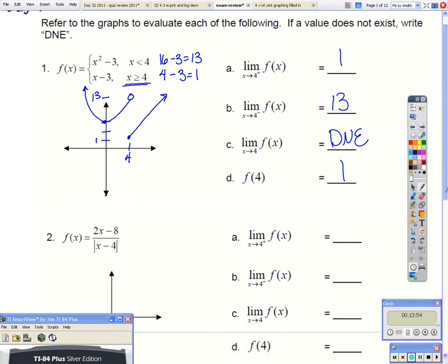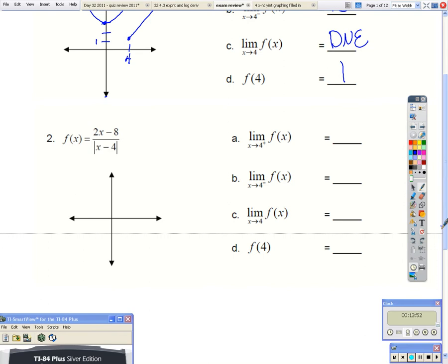So we're going to do the same thing for number 2. I could use my calculator to help me graph that, or you could plug in some points. So the limit as x approaches 4 from the right is positive 2. As we approach 4 from the left, that's negative 2. Those numbers don't match, so the limit does not exist.